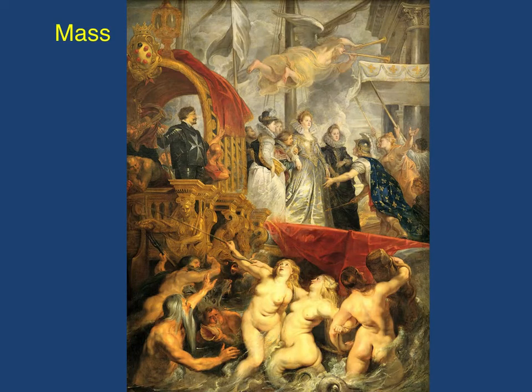The next element we're going to explore is mass. Mass is defined as the physical volume and density of an object. For three-dimensional works this is easy — if we wanted to look at the mass of a sculpture, we could physically weigh it, measure it, and know exactly its size and weight. However, this gets a little trickier when we're talking about two-dimensional art. For example, look at the painting here. This is by Peter Paul Rubens — it's The Disembarkment of Marie de' Medici at the Port of Marseille on November 3rd, 1600, painted in 1626, oil on canvas.